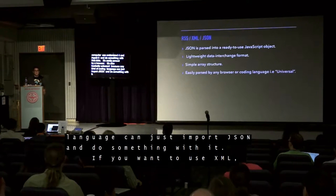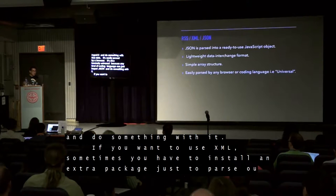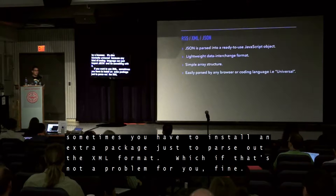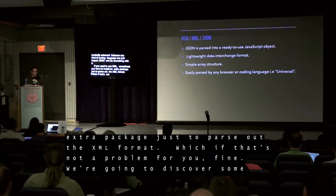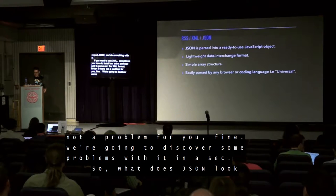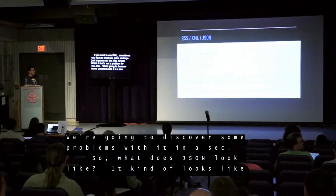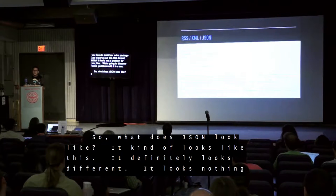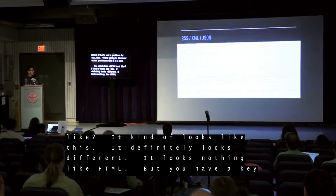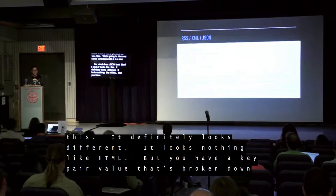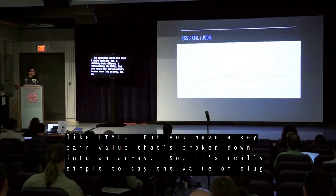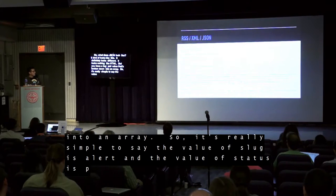If you want to use XML, sometimes you have to install an extra package just to parse out the XML format. We're going to discover some problems with it in a sec. So what does JSON look like? It looks like this — it definitely looks different, nothing like HTML. You have key-value pairs broken down into an array. So it's simple to say the value of slug is 'alert' and the value of status is 'publish'.